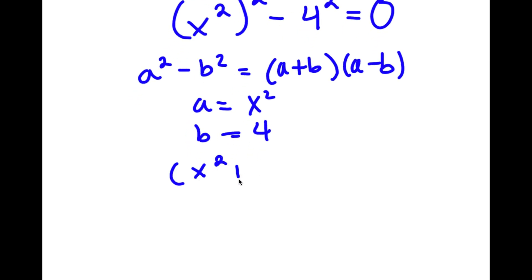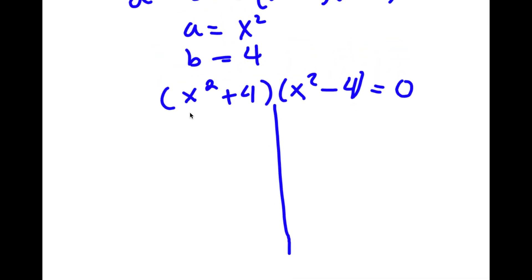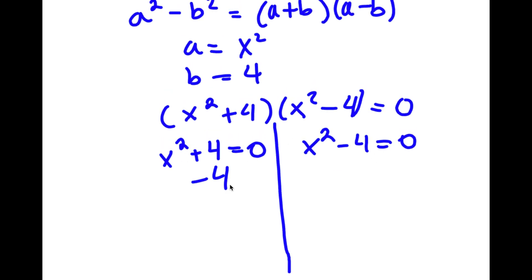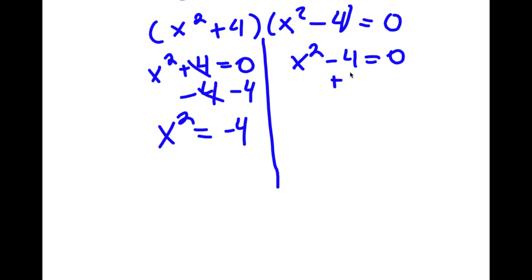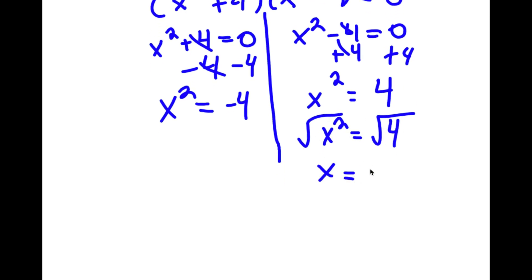So now I have x squared plus 4 times x squared minus 4 is equal to 0. This gives me two equations: x squared plus 4 equals 0, and x squared minus 4 equals 0. For x squared minus 4 equals 0, I add 4 on both sides to get x squared equals positive 4. Taking the square root of both sides, the square root of x squared is x, and the square root of 4 is positive or negative 2.